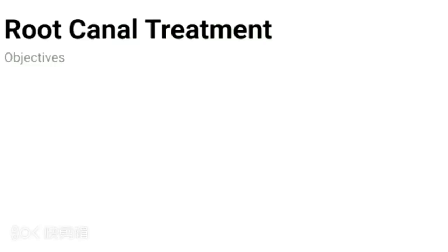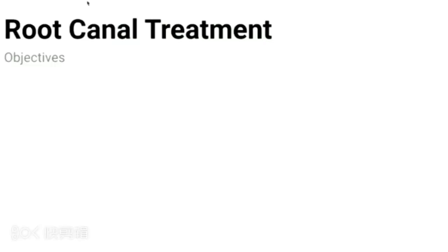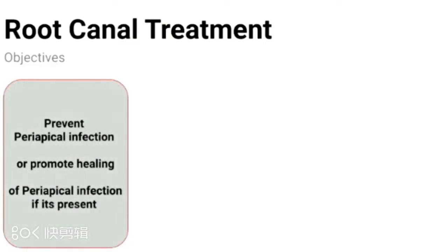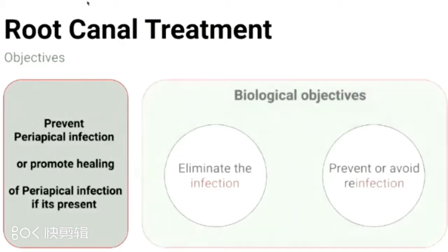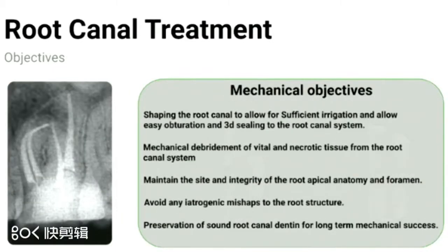The objective for canal treatment is to prevent periapical infections or to promote healing of periapical infection if present, and this comes through biological and mechanical objectives. The mechanical objective is to mechanically deprive the vital or necrotic pulp tissue from the root canal system while maintaining the site and integrity of the apical foramen.